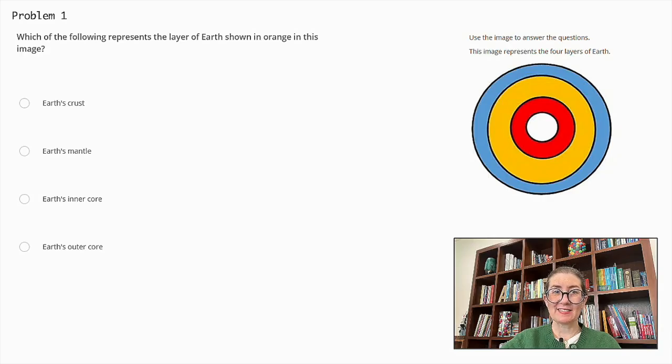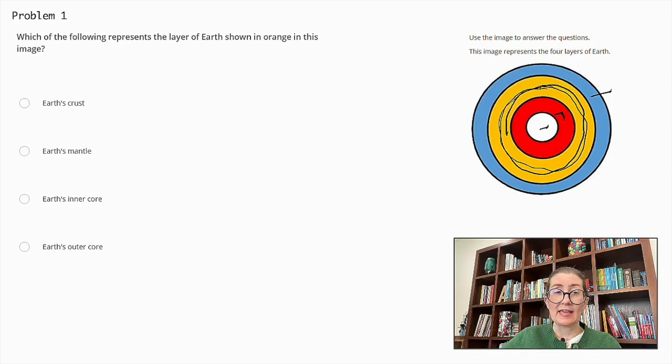Which of the following represents the layer of Earth shown in orange in this image? So this layer here. Earth's crust, Earth's mantle, Earth's inner core, or Earth's outer core. So let's start with the white is the inner core. The red is the outer core. The Earth's crust is the blue. And this layer here is the mantle. So the correct answer is the mantle.